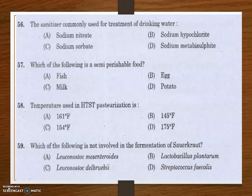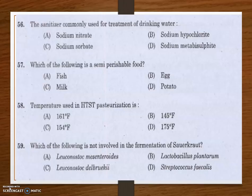Next question: the temperature used in HTST pasteurization. HTST stands for high temperature short time pasteurization. Options are 161°F, 145°F, 154°F, and 175°F. The temperature used in HTST pasteurization is 161 degrees Fahrenheit and the time is 15 seconds.